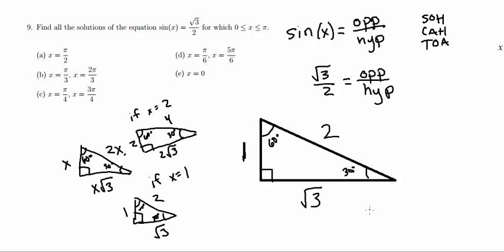So now let's revisit the question, and it says, find all the solutions of the equation sine x equals rad 3 over 2, for which 0 is less than or equal to x is less than or equal to pi.